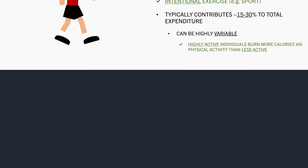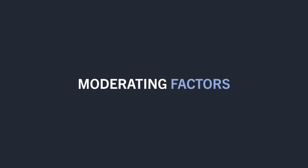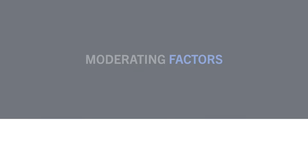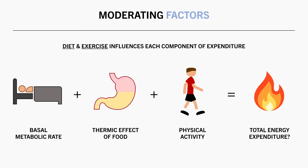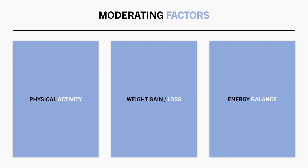So far, it seems pretty simple — we just calculate the individual components of energy expenditure, add them together, and we have our total daily energy expenditure, right? Well, technically yes, but it is not that simple in reality. This is because once we start changing our diet and exercise habits, it influences other components of energy expenditure. There are three primary exercise and diet-related factors which will influence the components of energy expenditure.